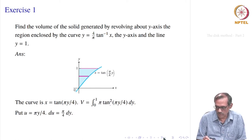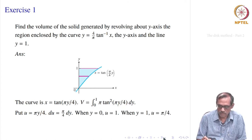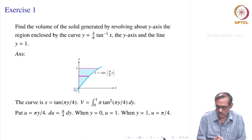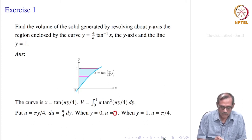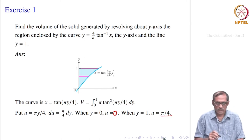To evaluate, we have tan²(πy/4). We substitute u equal to πy/4, so du becomes (π/4) dy. When y = 0, u = 0, and when y = 1, u = π/4.